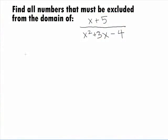In this example, we want to find all the values of x that must be excluded from the domain for the rational expression x plus 5 over x squared plus 3x minus 4.